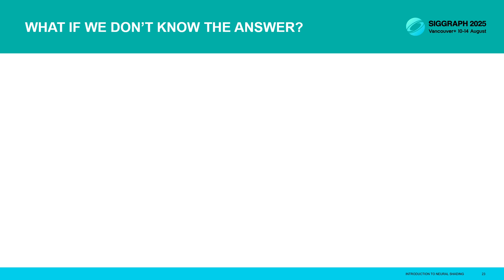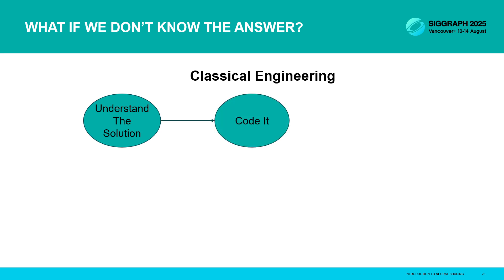Before we dive into neural shading, I want to take a quick look at what we might call classical engineering. Before machine learning came along, a massively simplified view of all of our jobs might look like this: First, we humans attempt to understand a problem and come up with a solution. Then we describe the solution to a computer through coding. And finally, if we're successful, the computer can do it and we're all really happy.